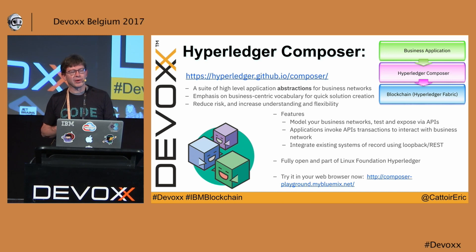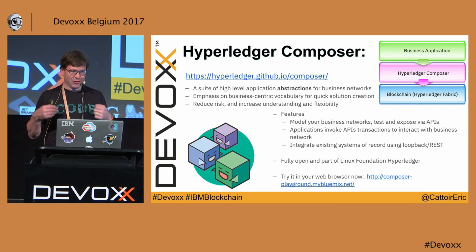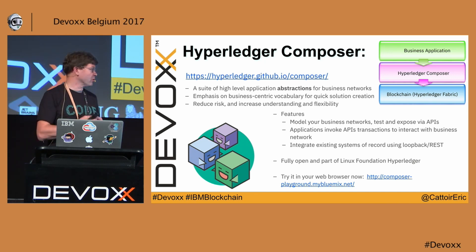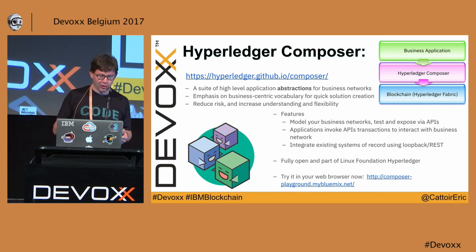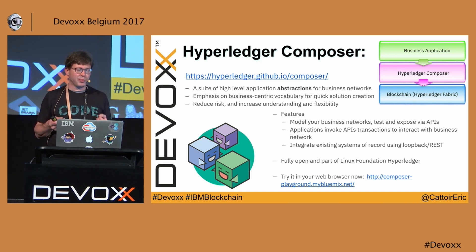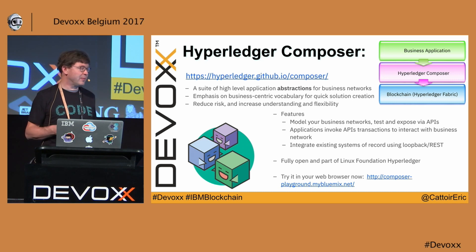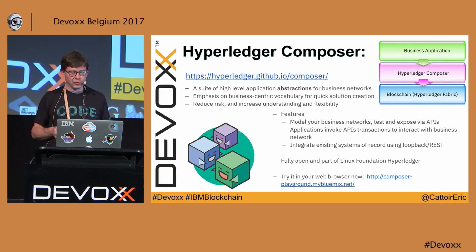A lot has changed with version one, because now we have something called Hyperledger Composer. The whole idea about Hyperledger Composer is that instead of reasoning in Go code, you're going to start reasoning in business concepts — you reason with entities and higher abstraction level constructs. The Composer helps you by generating things like your smart contracts, and then you build your business application with whatever user interface and integrations you want.